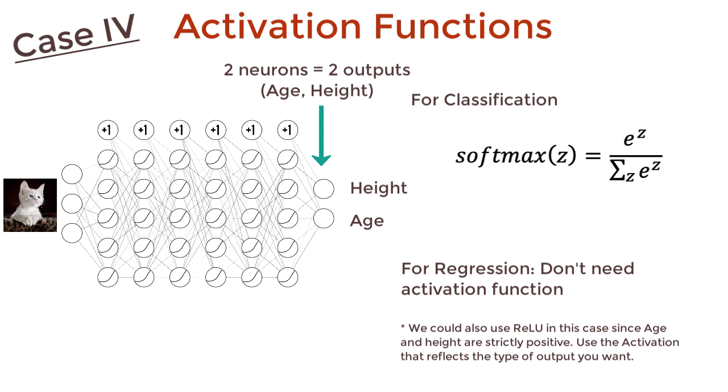Now, this is the first pass over the activation functions. We went over four cases, and we took a look at the softmax activation for the output layer. Now let's go through these cases again and add some more details.